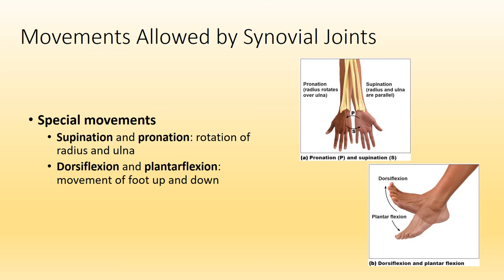Another special movement that occurs at the ankle joint is dorsiflexion and plantarflexion. Think about driving a car — as you lift your foot and toes up off the ground, that is dorsiflexion. As you go into a calf raise or up on your toes, that is plantarflexion. Supination and pronation only occur in the forearm, and dorsiflexion and plantarflexion only occur at the ankle joint.